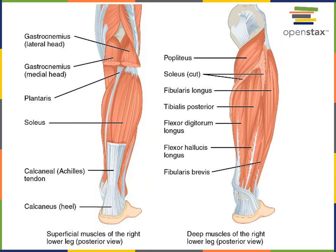Here in a posterior view, the most superficial muscle of the sural region has been cut to allow a view of the deeper muscles. Gastrocnemius is the most superficial muscle that gives shape to the sural region. It has both a lateral head and a medial head — the lateral head originates from the lateral condyle of the femur, and the medial head originates from the medial condyle of the femur.